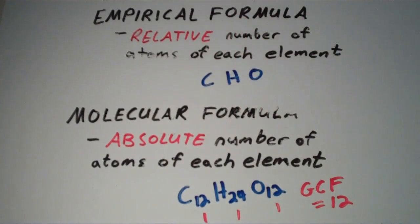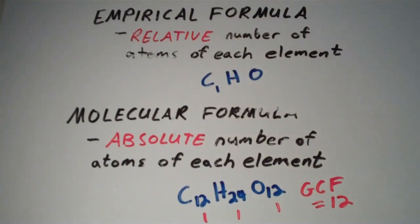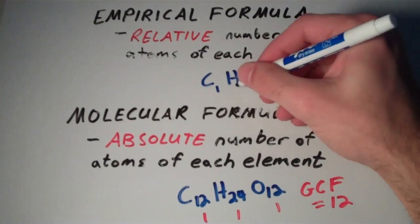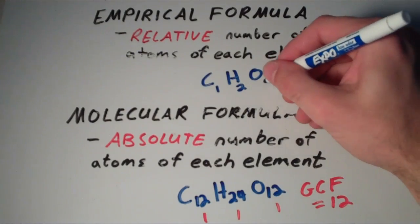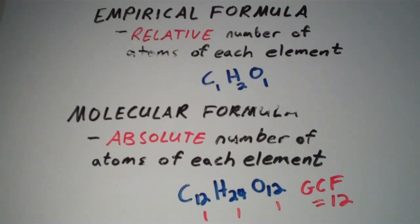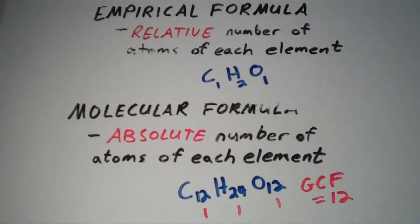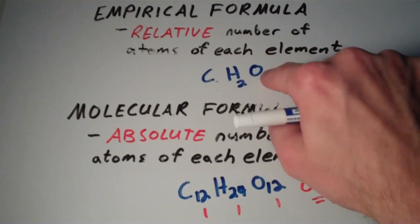The result is CH2O. Dividing 12 by 12 gives 1, and dividing 24 by 12 gives 2. So the empirical formula of C12H24O12 is C1H2O1, or simply CH2O.